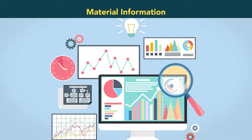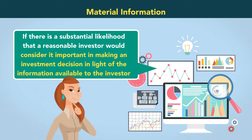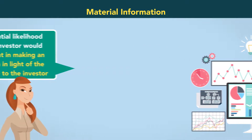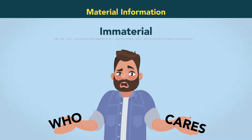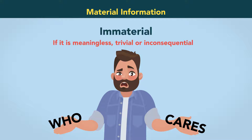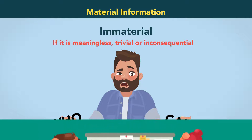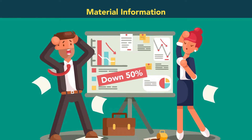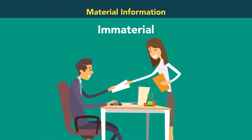Material information. Information is material if there is a substantial likelihood that a reasonable investor would consider it important in making an investment decision in light of the information available to the investor. A statement or omission is immaterial if it is meaningless, trivial, or inconsequential. An example of material information would be if the company's revenues for the quarter were 50% lower than anticipated. An example of immaterial information would be if the company decided to hire an additional administrative assistant to handle scheduling for the CEO.